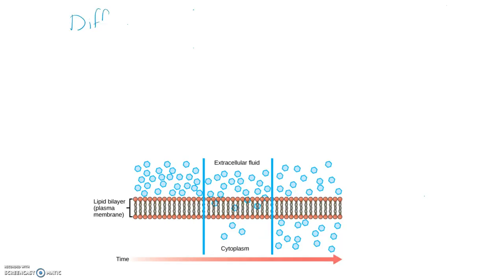So let's talk about diffusion. Diffusion is a process that does not require any energy input, and it is where molecules, or solute molecules as I'll call them, move from an area where they have high concentration to an area of low concentration. In other words, they're moving down their concentration gradient.